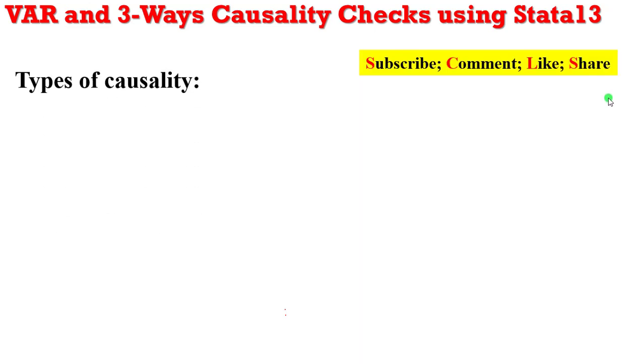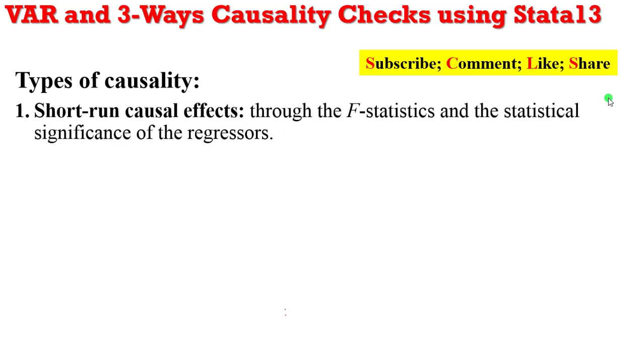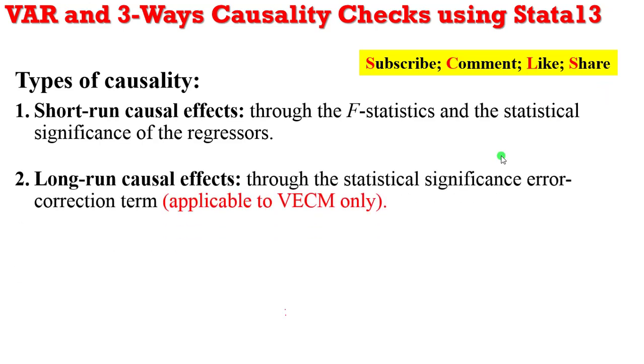So what are the types of causality? Number one, we have short-run causal effects, which can be detected either using the F statistics or the statistical significance of the regressors. We have long-run causal effects, which you can know through the statistical significance of the error correction term, that is if you are running the VECM.